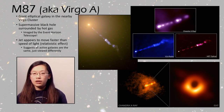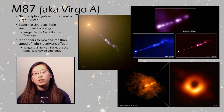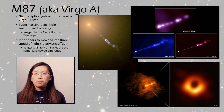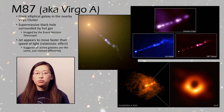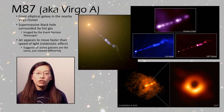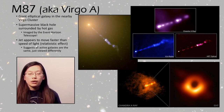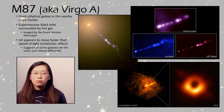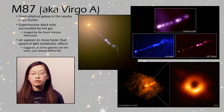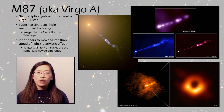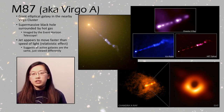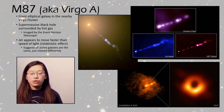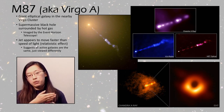Our next DSO is M87, also commonly known as Virgo A — a giant elliptical galaxy in the nearby Virgo cluster. Like many other active galaxies, it has a supermassive black hole at its center surrounded by hot gas. What makes this black hole special is that it was imaged by the Event Horizon Telescope, with results released earlier this year. The very prominent jet from M87 appears to move faster than the speed of light, but this is actually a relativistic effect because the jet is coming towards us. Based on this jet and other active galaxies, there's a theory called the Unified Model — that all active galaxies are really the same thing but viewed from different angles, whether the jet is pointed directly at us, perpendicular, or at some other angle.